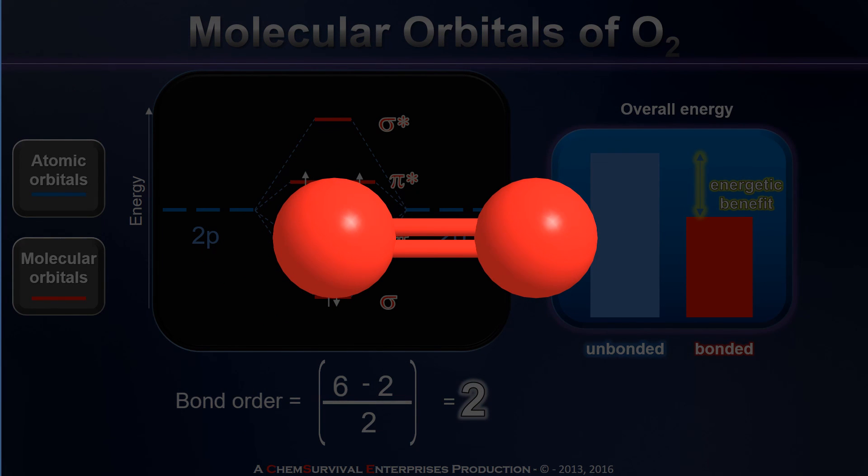So I hope that by now you're beginning to appreciate the power of molecular orbital theory. It not only confirms so many of the other topics we've already discussed on bonding, but it allows us to explain completely new properties that all of our other theories couldn't. Things like the paramagnetism of oxygen.